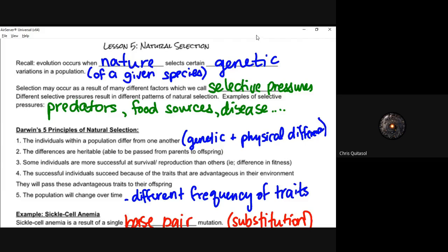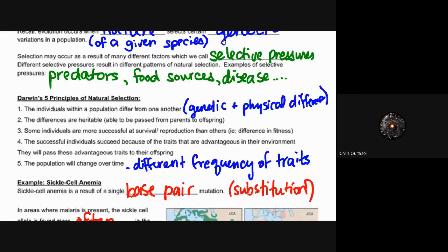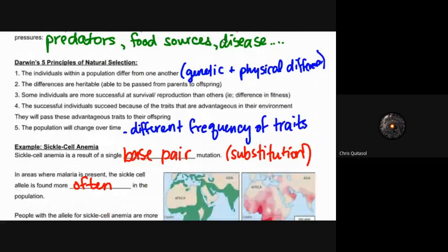When we look at Darwin's five principles of natural selection, we're talking about the idea that individuals within a population differ from one another. Those genetic and physical differences are heritable and can be passed on. Individuals that are successful at passing on their genes have a higher chance of survival and are more likely to create offspring with that same higher chance of survival and reproductive ability across multiple generations.